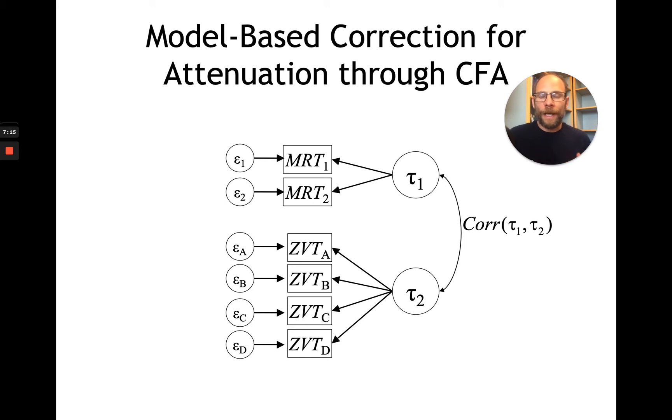And so this is a much more practical and also much more general procedure for estimating latent correlations that are corrected for measurement errors. You don't have to really use this correction for attenuation formula anymore. If you have access to CFA and if you have multiple indicators for your variables, you can run a CFA in programs such as, for example, Mplus.